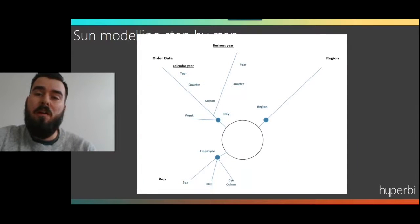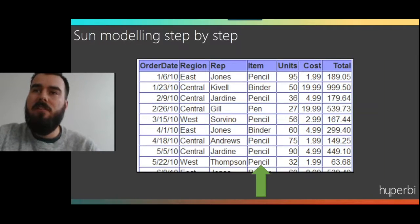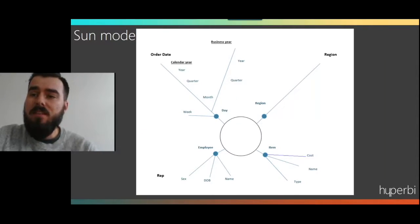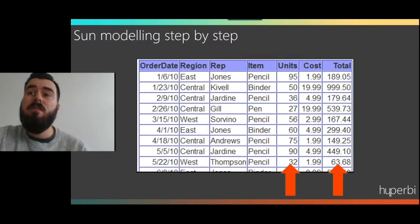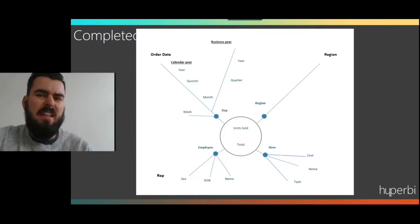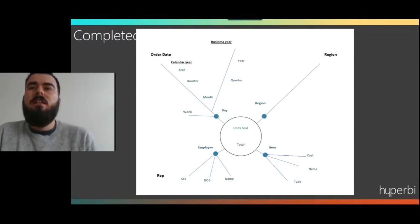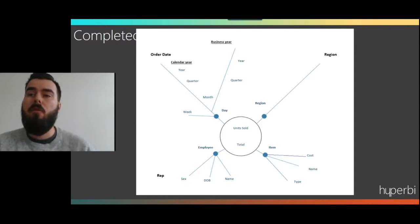We add on additional attributes about our employee. Then also we can add on our item, and we have the cost and name type, so we're working out what our additional requirements are. Our final step is to look at our measures and add our measures on — the amount of units and the total price — and they just sit in the middle of our circle. And essentially that's a completed sun model, with each spoke representing a type of dimension and the centre being our measures.